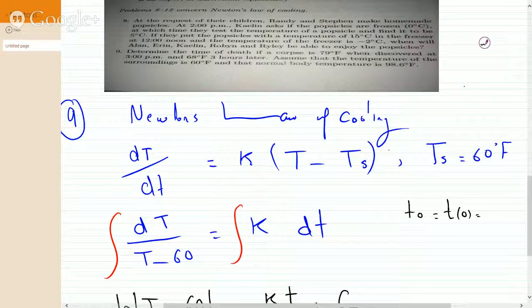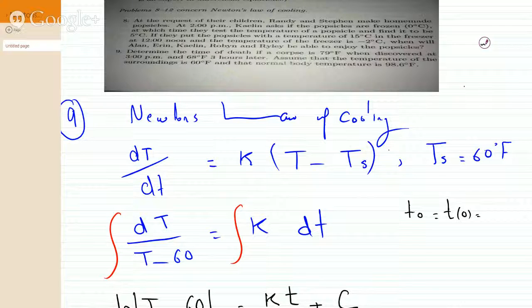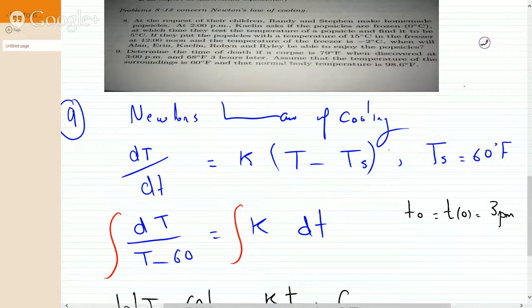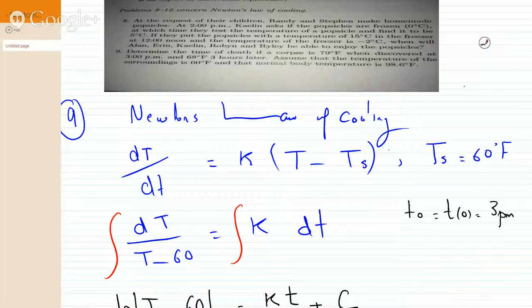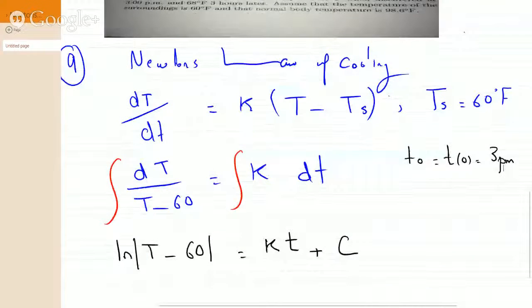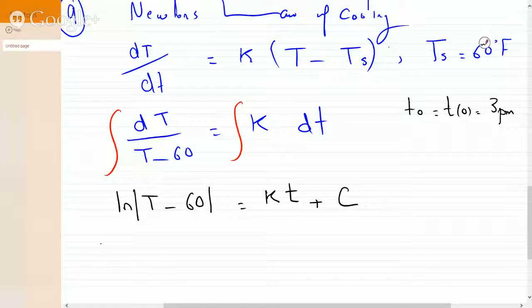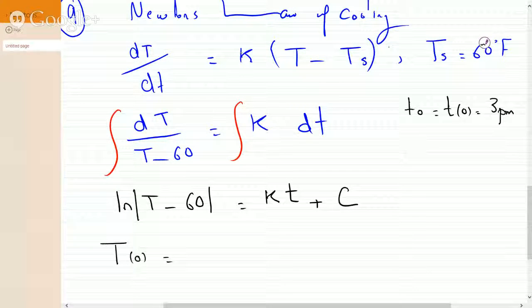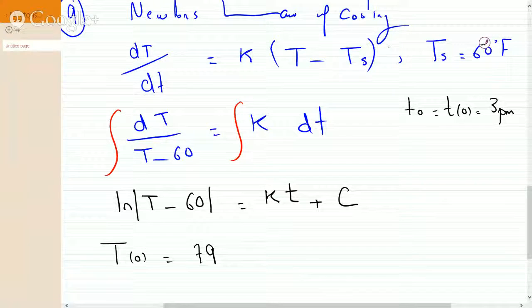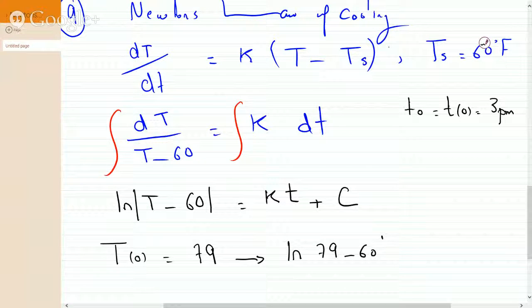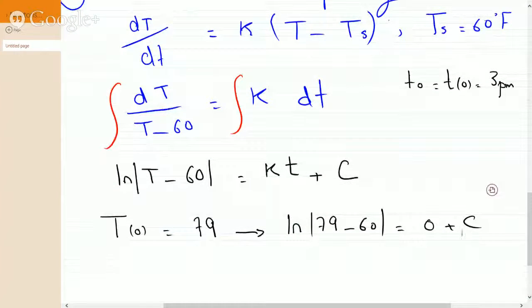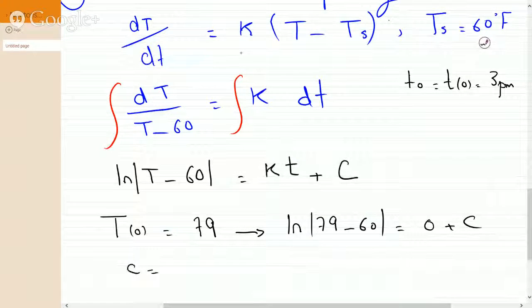When we integrate both sides, we will get ln of T minus 60 absolute value is equal to kt plus the constant of integration, c. Now we will invoke the initial conditions in the problem to solve for c. We will start t equals 0 at 3 p.m., so t at 0 is 79 degrees. Plugging this in, we get ln of 79 minus 60 equals 0 plus c. We will solve for c, and c turns out to be ln 19.